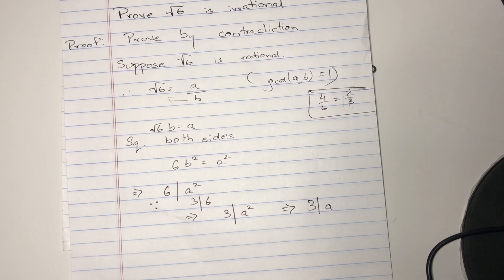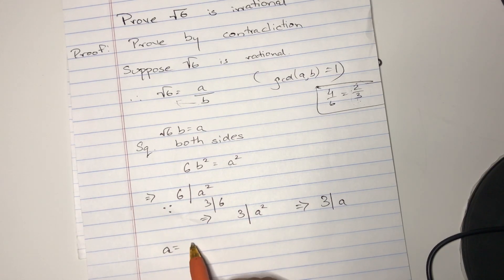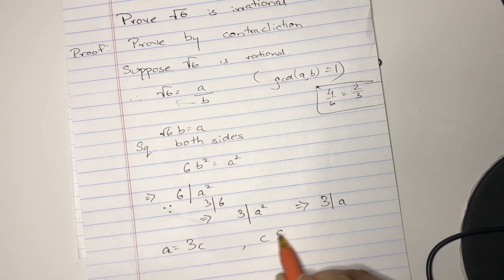I hope everything made sense up until now. So A could be represented as 3 times C. Let C be any number, any integer.